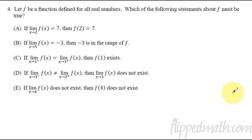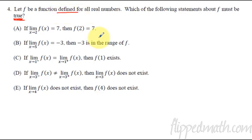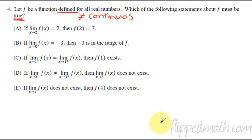Number 4 is a tricky one — I'd appreciate a good explanation in the comments. The problem states: let f be a function defined for all real numbers. This means the function exists everywhere, but defined does not mean the function is continuous. For example, I could have a graph that jumps up with a filled-in dot and continues — defined for all x values but not continuous. Keep that in mind.